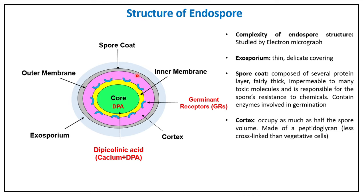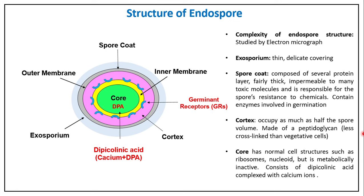The cortex occupies as much as half of the spore volume and is made up of peptidoglycan that is less cross-linked than that of vegetative cells. Inside the core, calcium and DPA are present along with ribosomes and the nucleoid, but they are in a metabolically inactive form because the spore is a dormant structure.